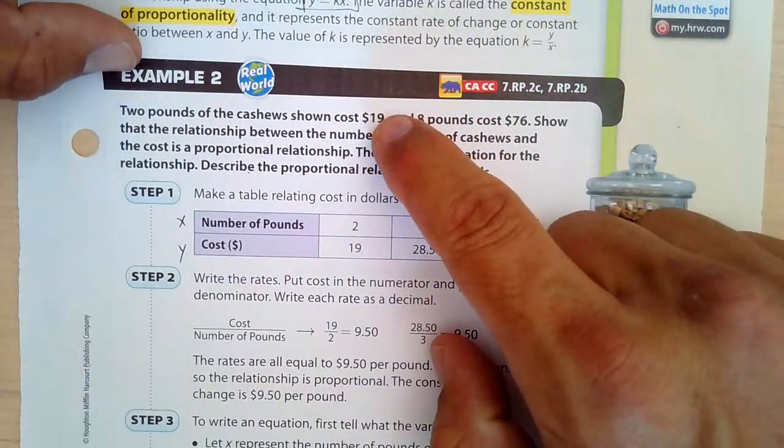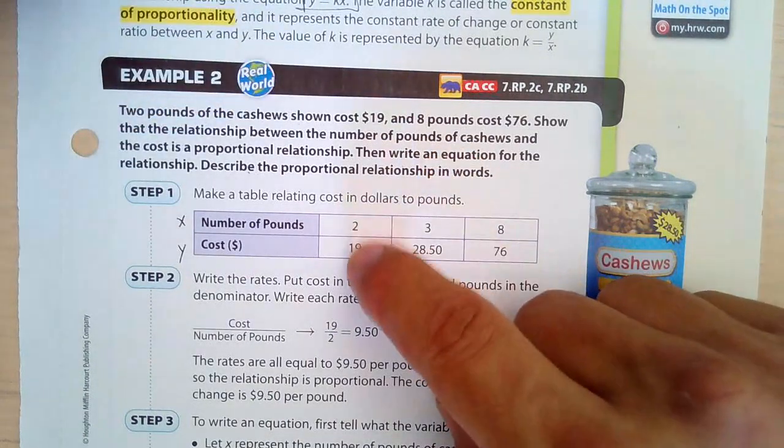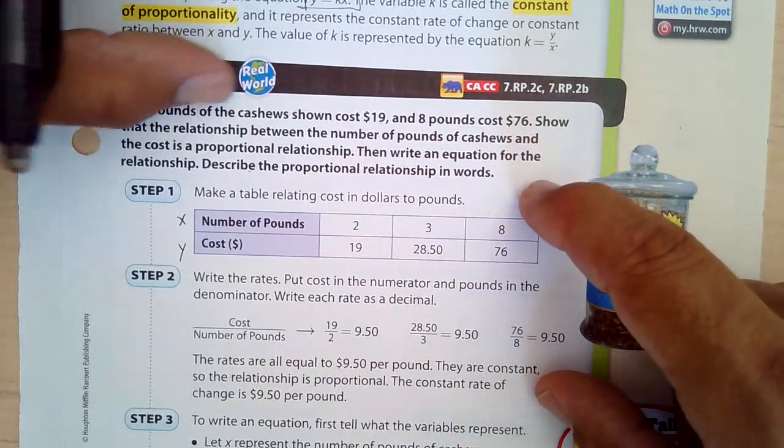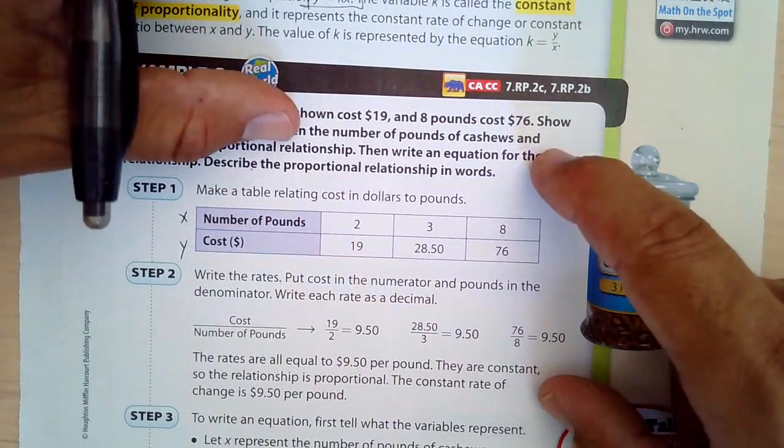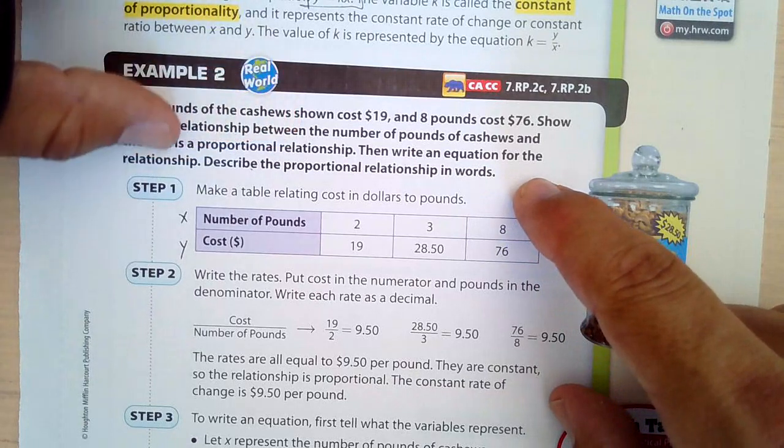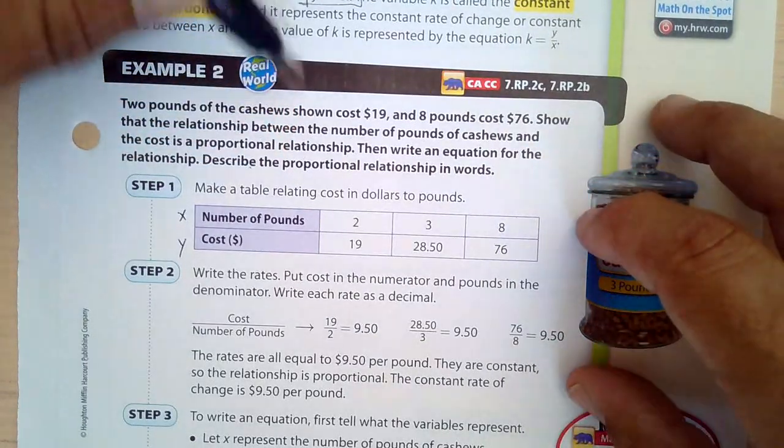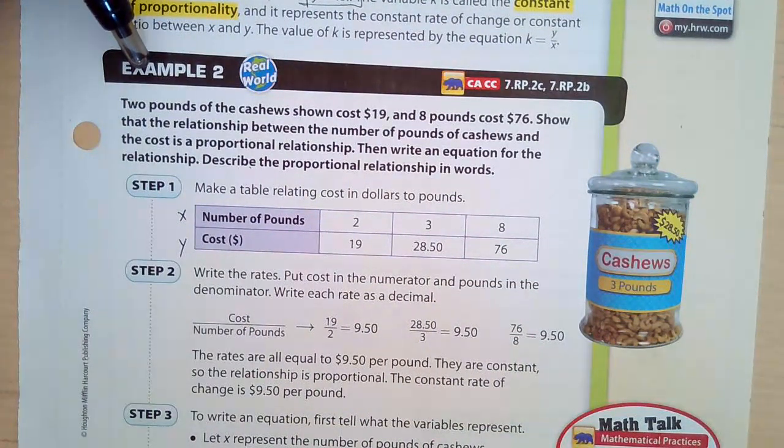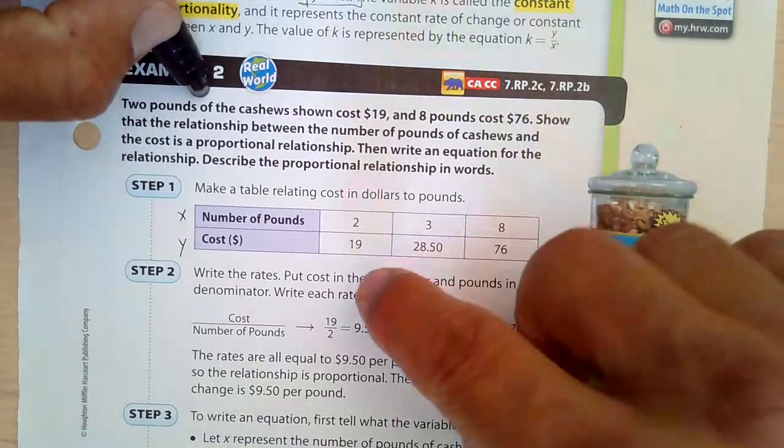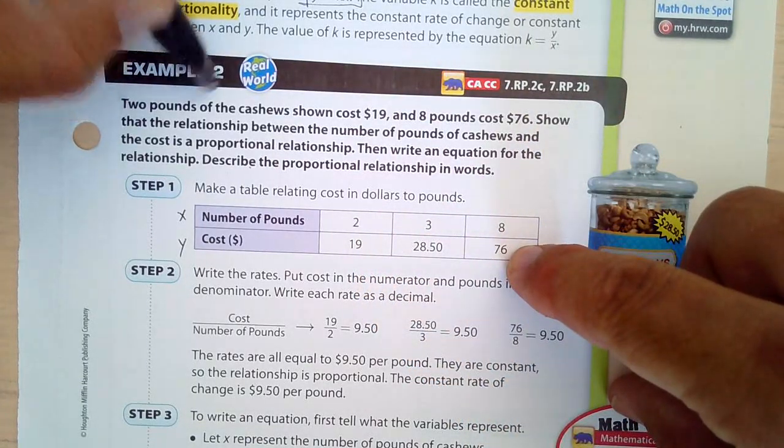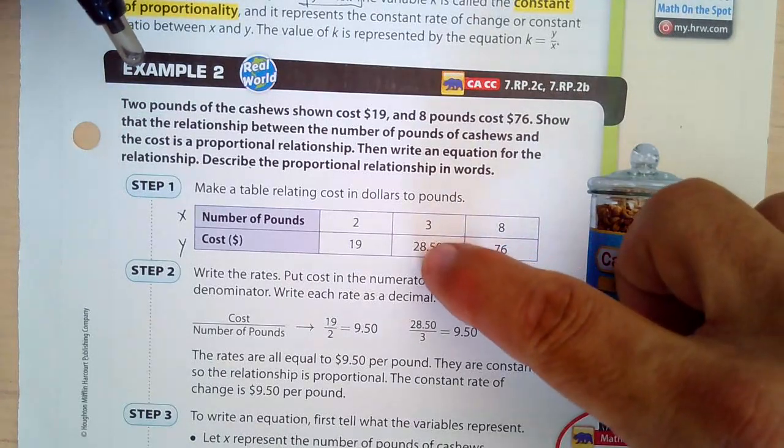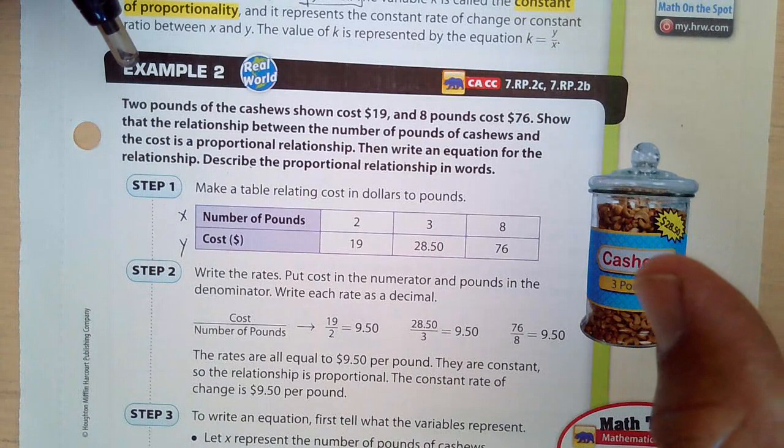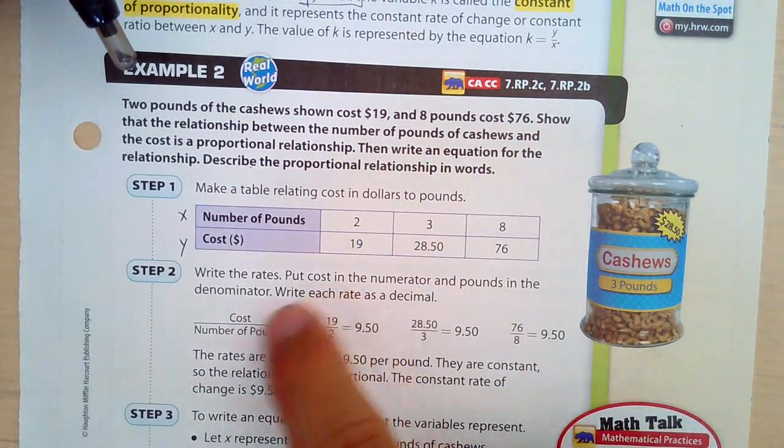Two pounds of cashews shown cost $19. So two pounds for 19. So two pounds for 19. That's in the table here. Eight pounds cost $76. So eight pounds is $76. Show that the relationship between the number of pounds of cashews and the cost is a proportional relationship. Then write the equation for the relationship. Describe the proportional relationship in words. So we have our table. We have cost and we have pounds. Now, what's kind of weird here is we have two for 19, eight for 76. It's not immediately obvious where this one came from to me. I'm feeling stupid now, but it might pass. Okay. So at any rate, write the rates.